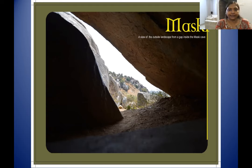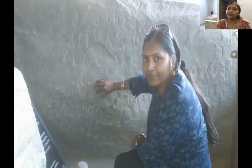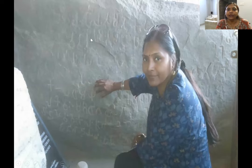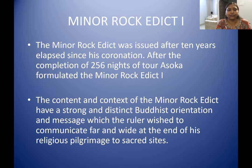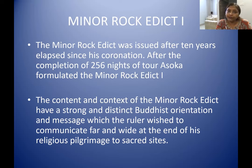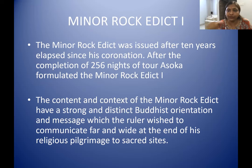Now let us visit the Maski site. This is the Ashokan inscription — you can see me in front of it — and in the very first line you have the name 'Devanangpiya Ashoka.' Minor rock edict 1 was issued after 10 years had elapsed post-coronation. It mentions that after the completion of 256 nights of a religious pilgrimage, Ashoka decided to engrave the minor rock edict. The whole scheme of engraving edicts started with this. The content and context of minor rock edict 1 have a strong and distinct Buddhist orientation.